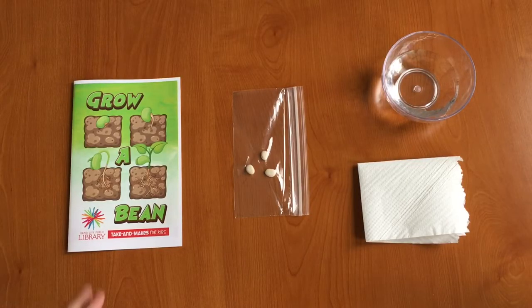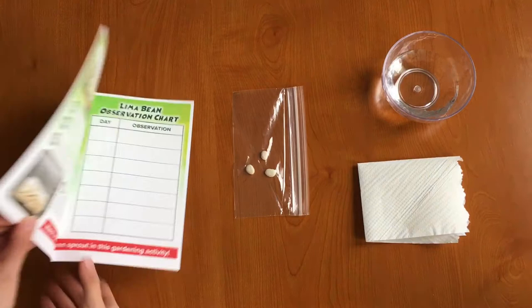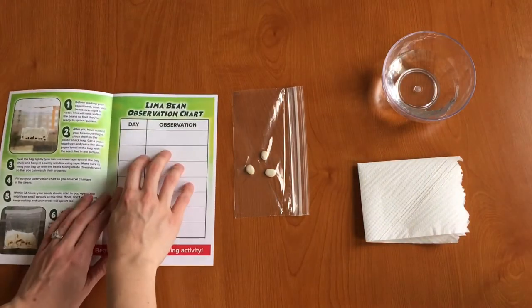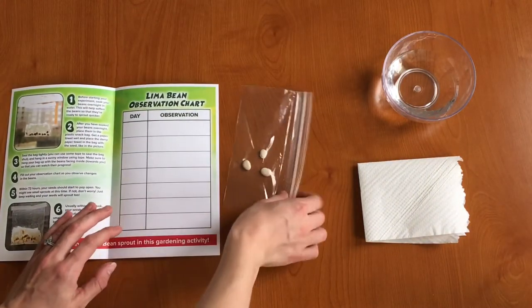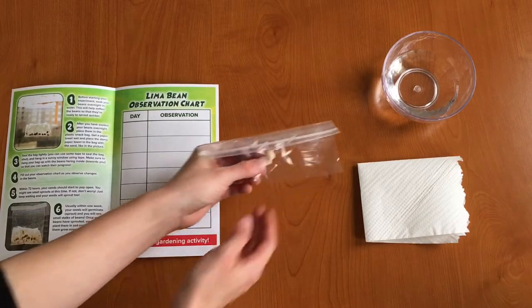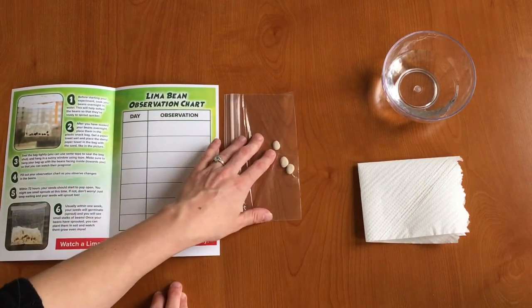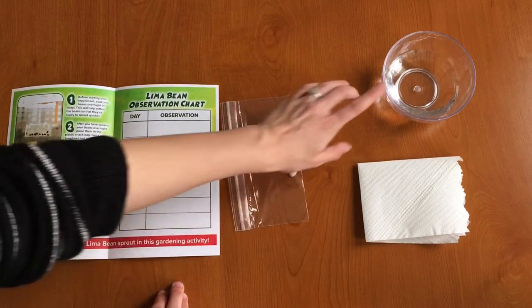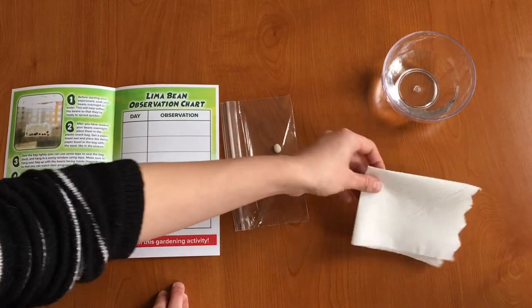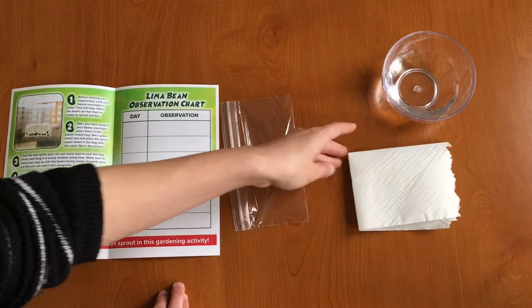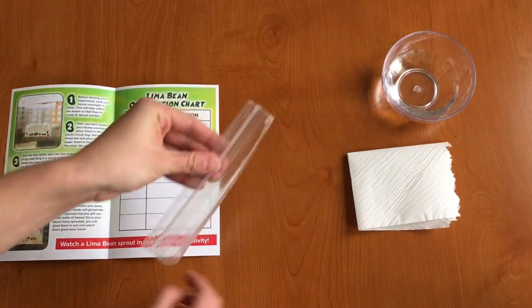In your Take and Make kit you should have an instruction booklet that also has your observation charts inside. You should have a plastic baggie with three lima bean seeds in it and that's what comes in your kit, but you're also going to need a bowl of water and a paper towel that is white. So let's get started.